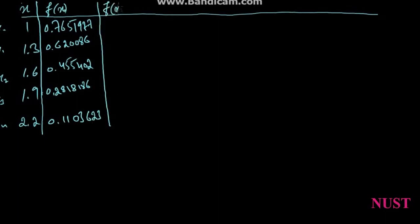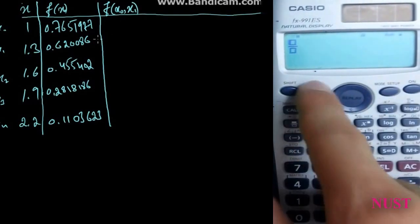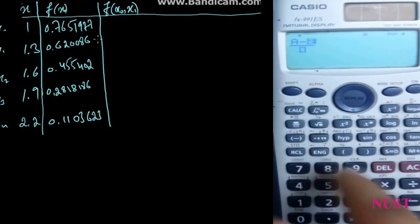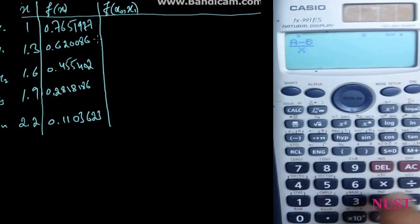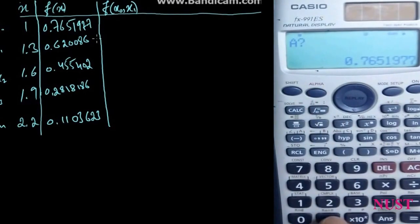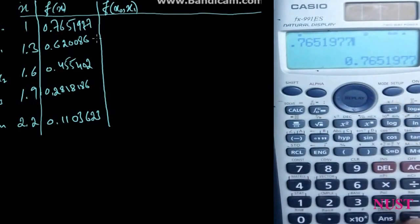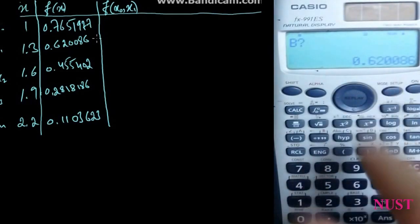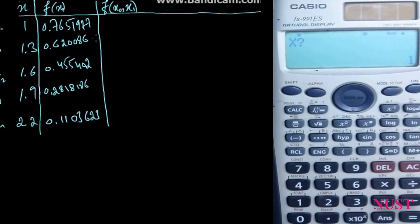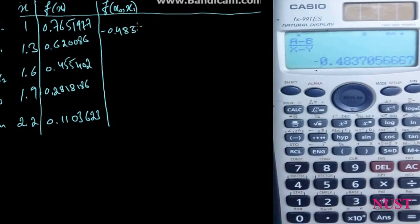Now to find the interpolation, make a column for first divided difference using a calculator. Write down the equation A minus B. Press Scale C; for value of A enter 0.7651977, for value of B enter 0.620086, for X enter 1, and for Y enter 1.3. We get first divided difference: minus 0.4837057.